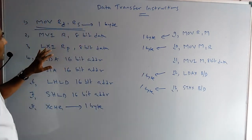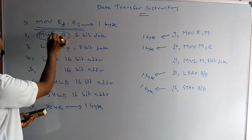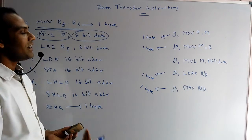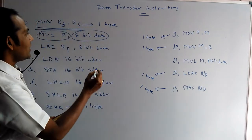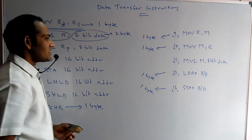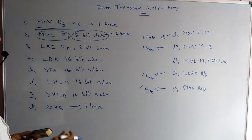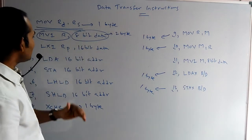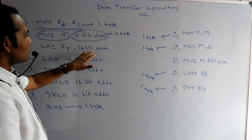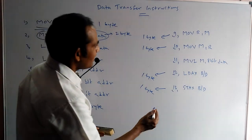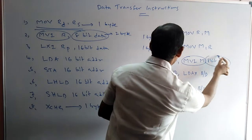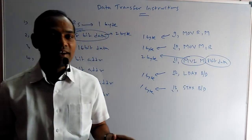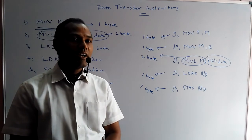In some instructions, if you observe here, there are some letters followed by 8-bit data. That means the letters form 1 byte and the 8-bit data forms another byte — making it a 2-byte instruction. Letters followed by 8-bit data will always become a 2-byte instruction.